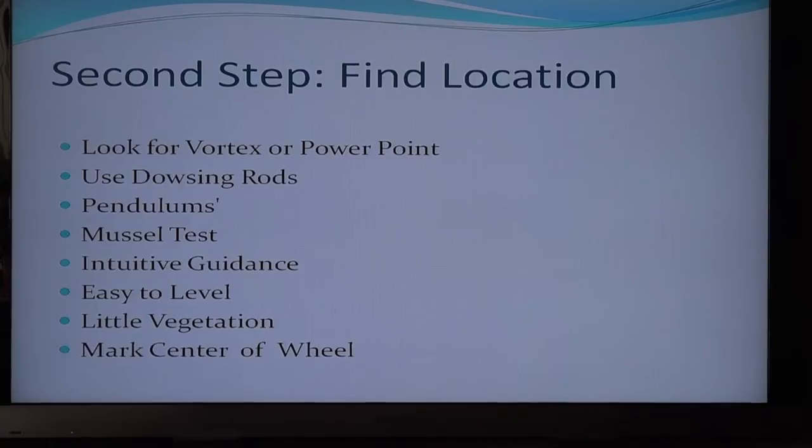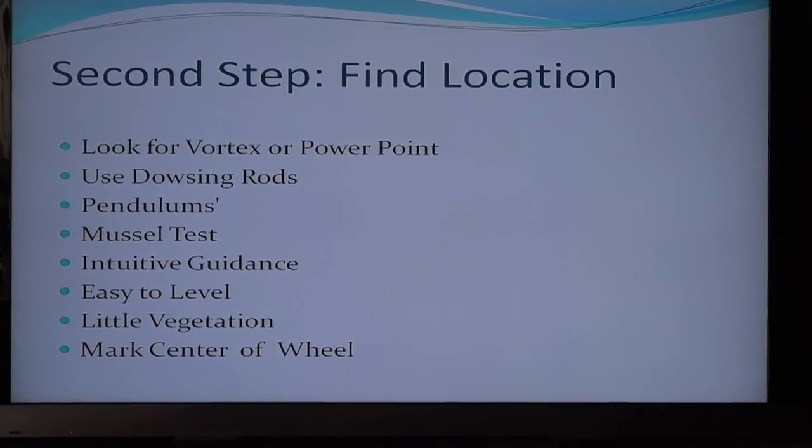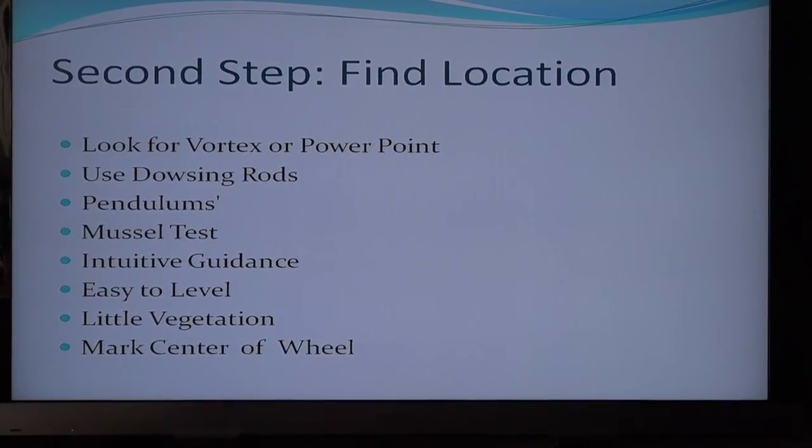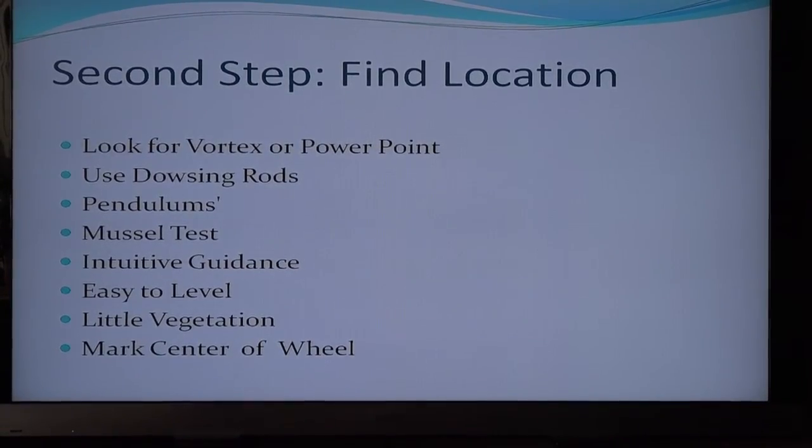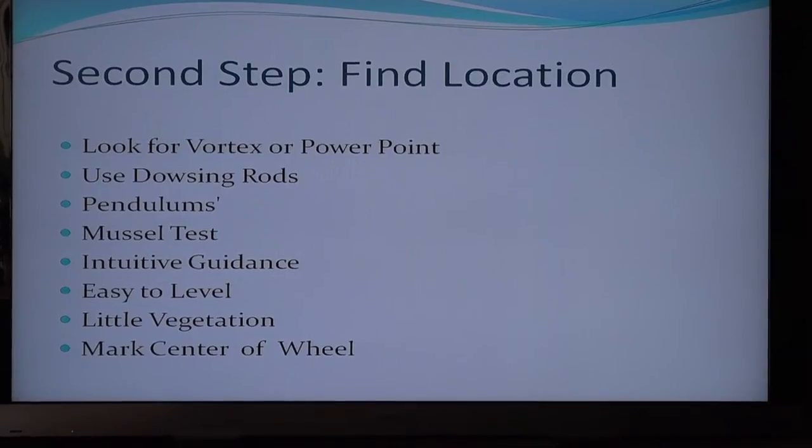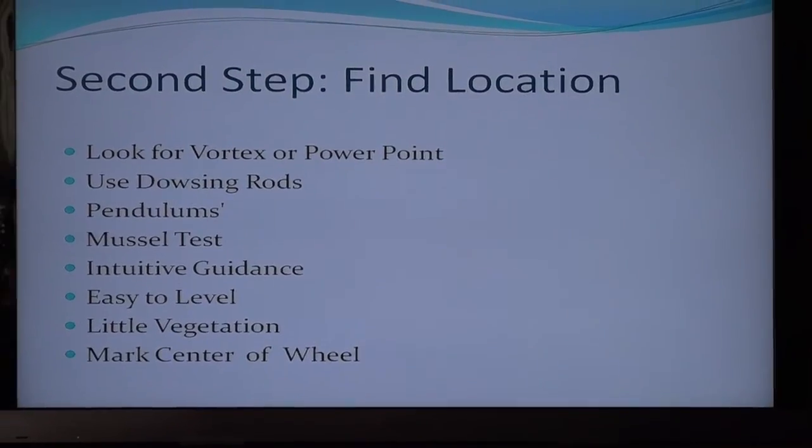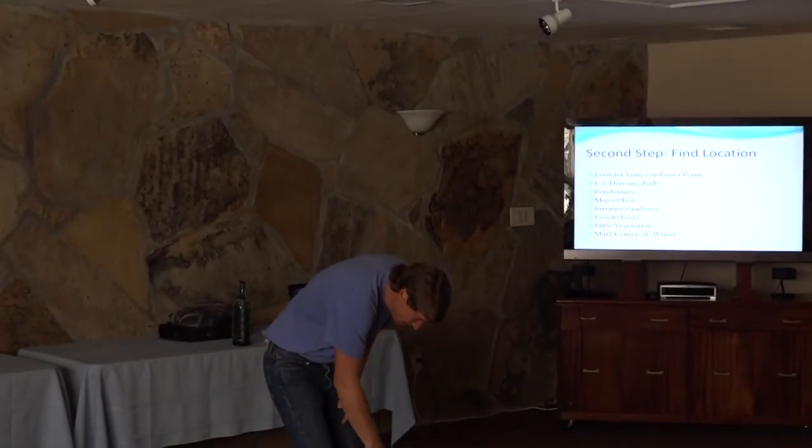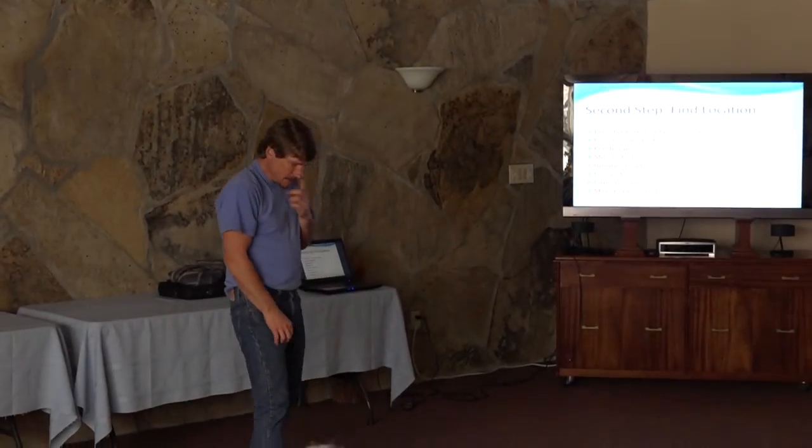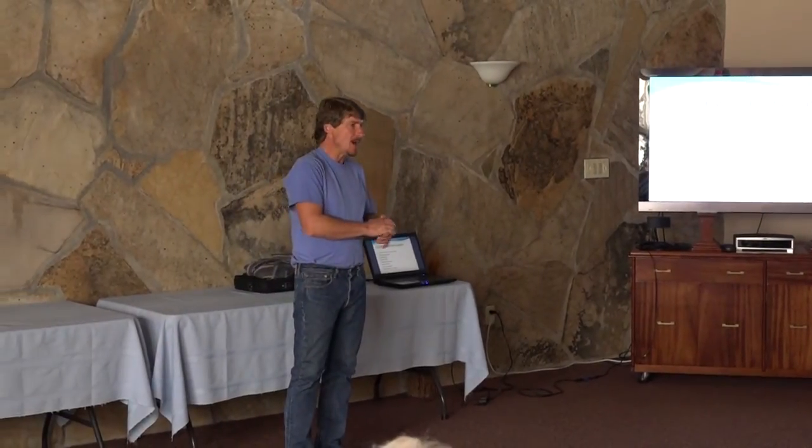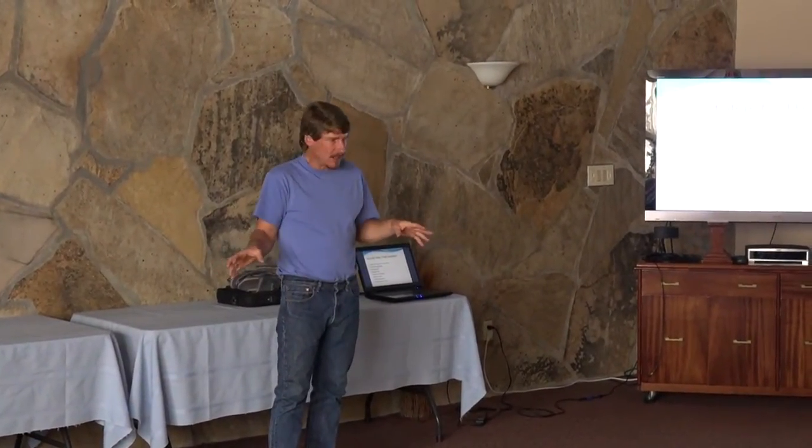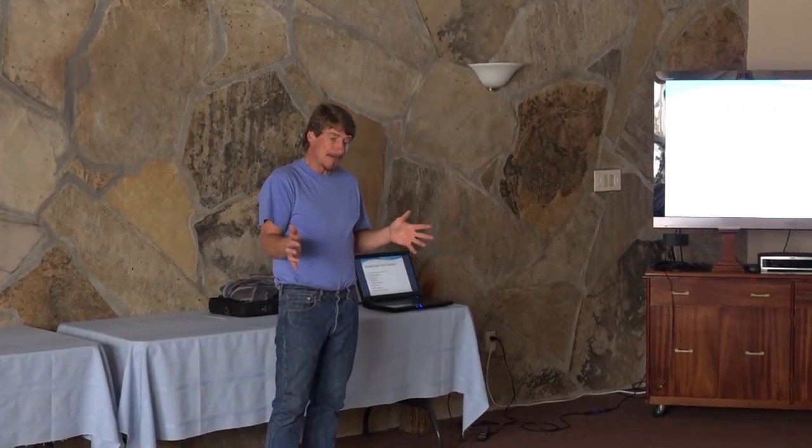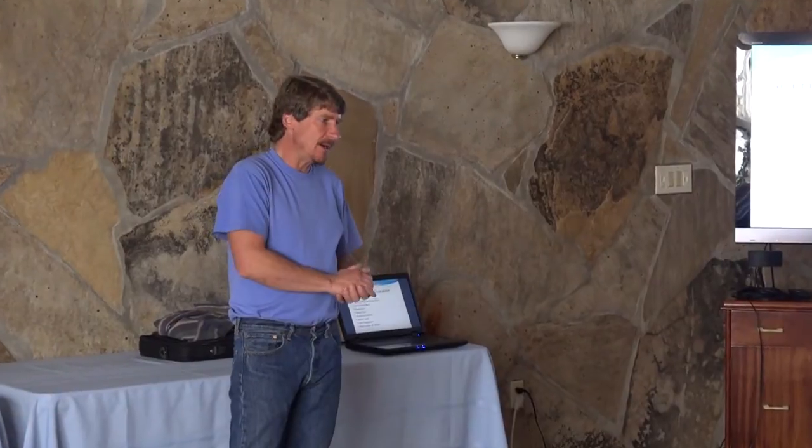So again, use whatever works best for you. And then basically once you find that location, which I, in the beginning, would take dowsing rods and I just walk around and tell and I would set my intentions, what I'm looking for. And then once the rods cross, I'm like, okay, here it is. This is the place. And then so I make a mark. So now I know where the center of my wheel is. And another thing you can do in cases, if you have a lot of rock or vegetation going on, try to find a place and circumstances where it's not going to be so complicated to level land and to clear it out.